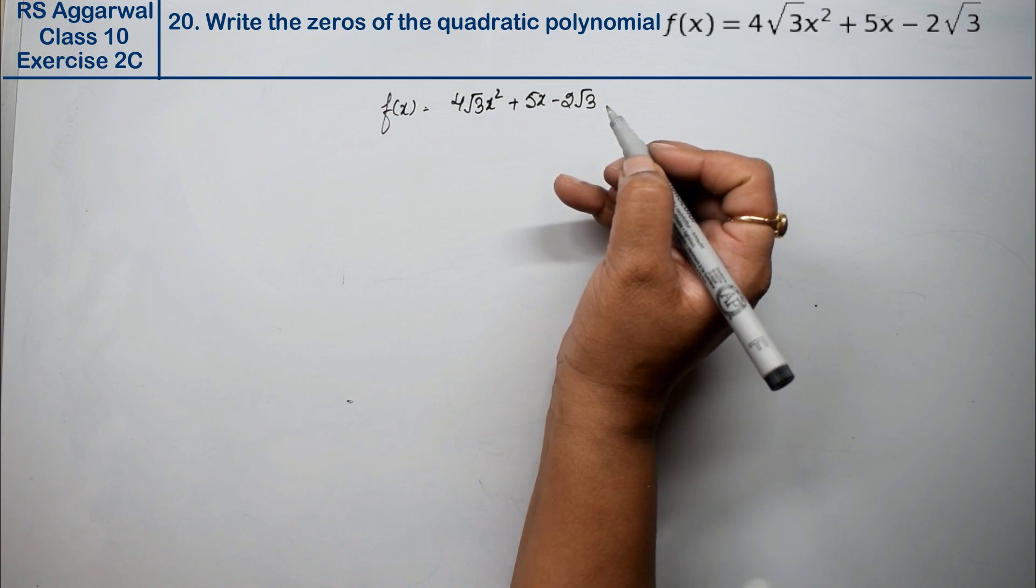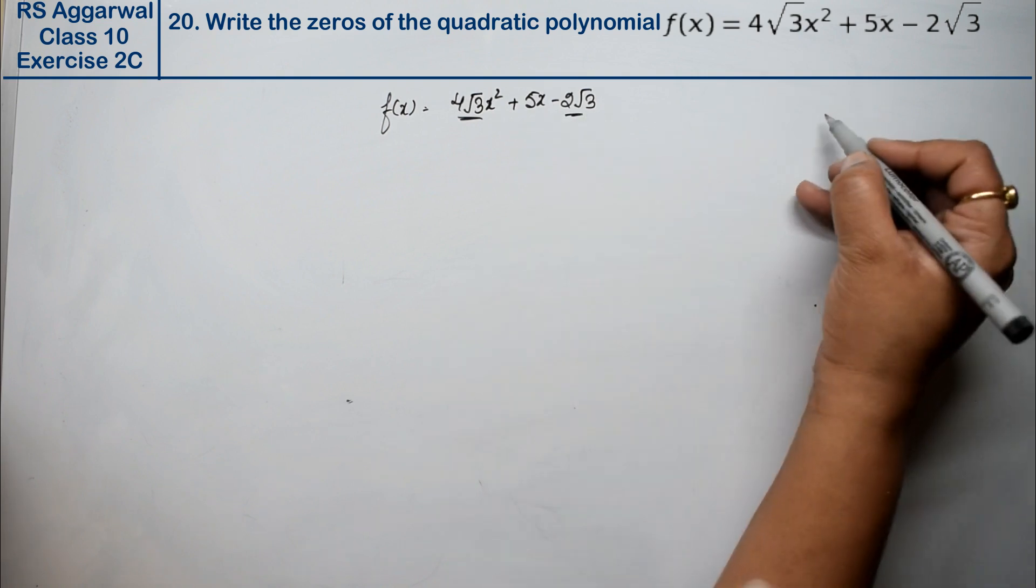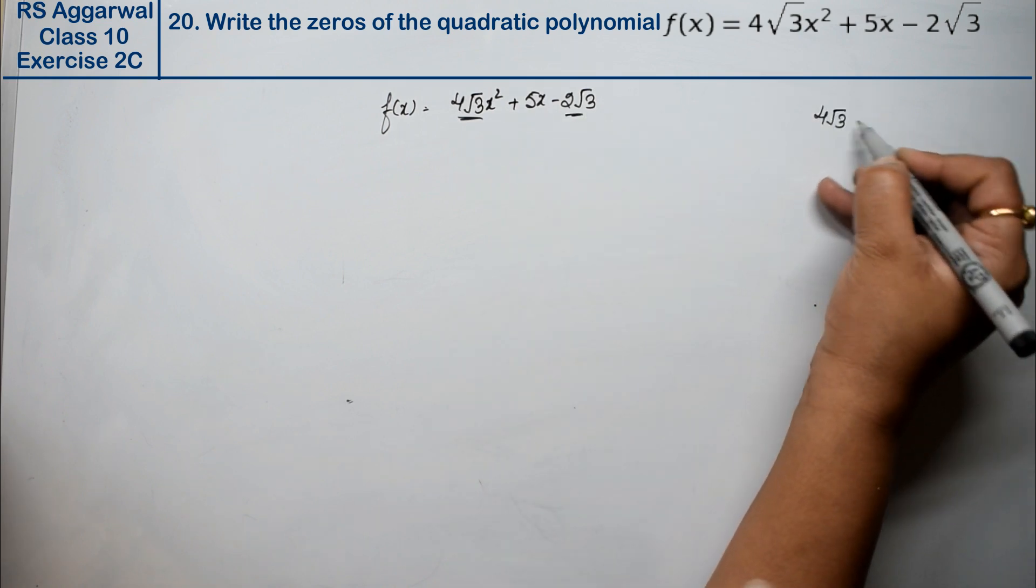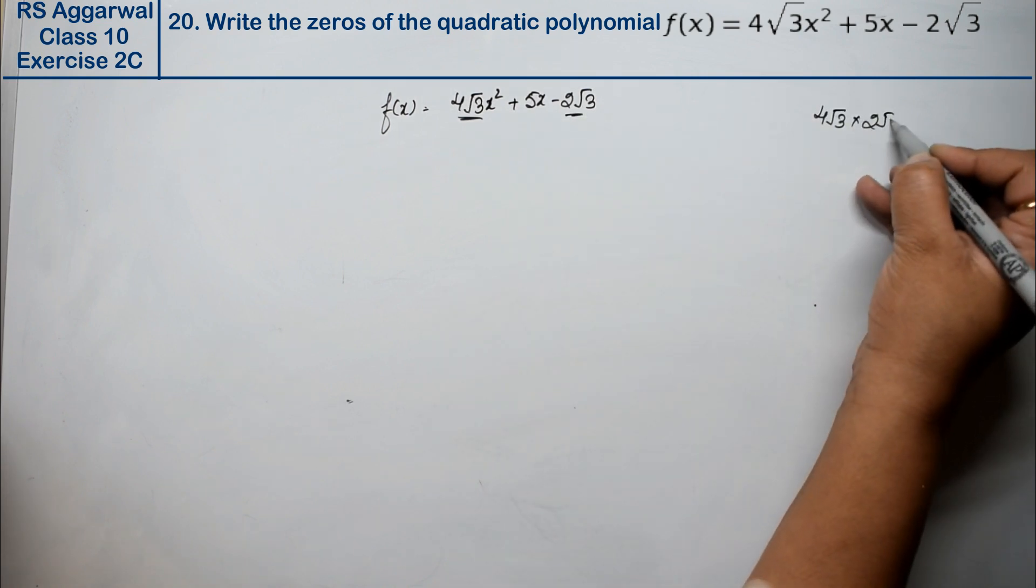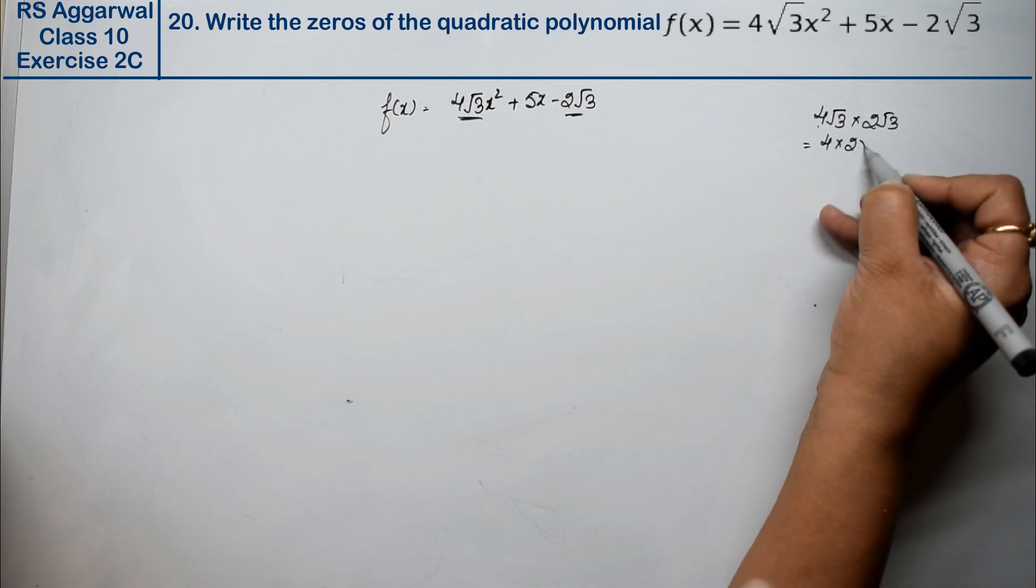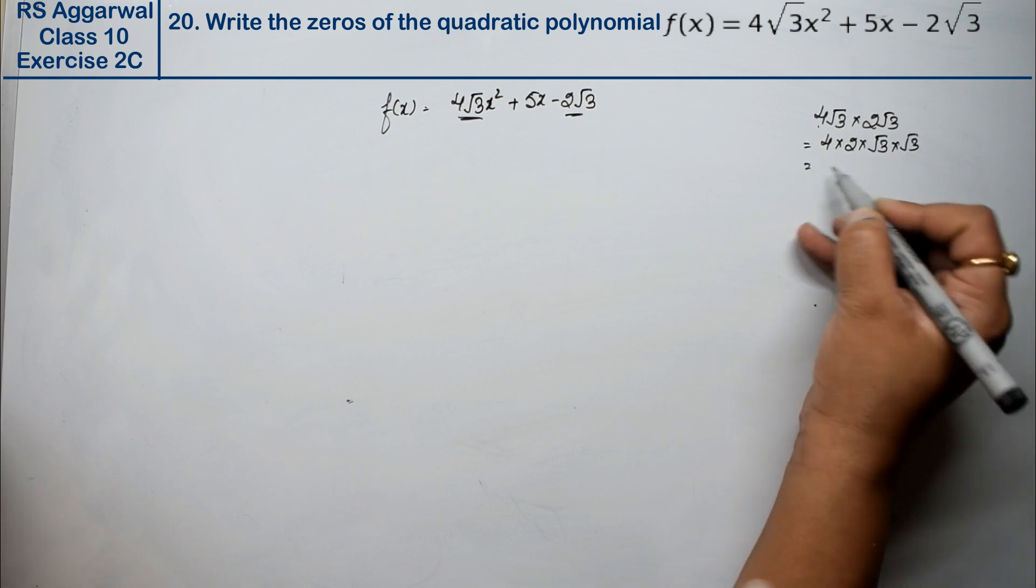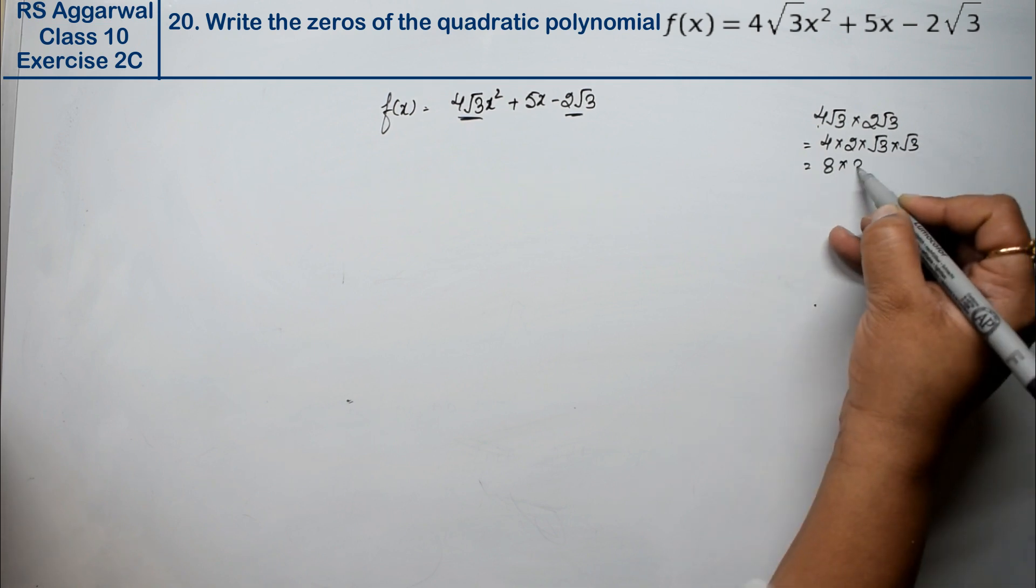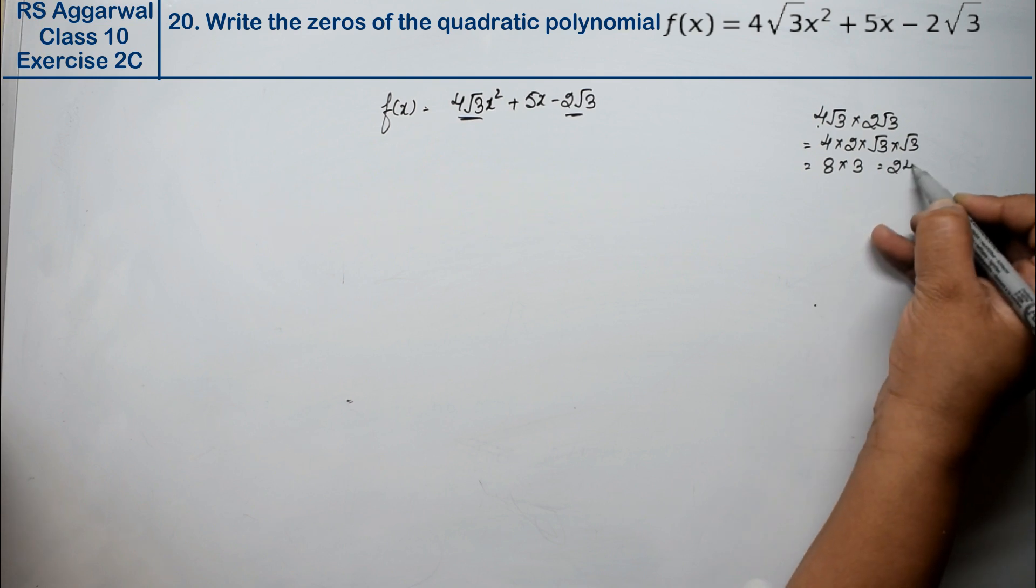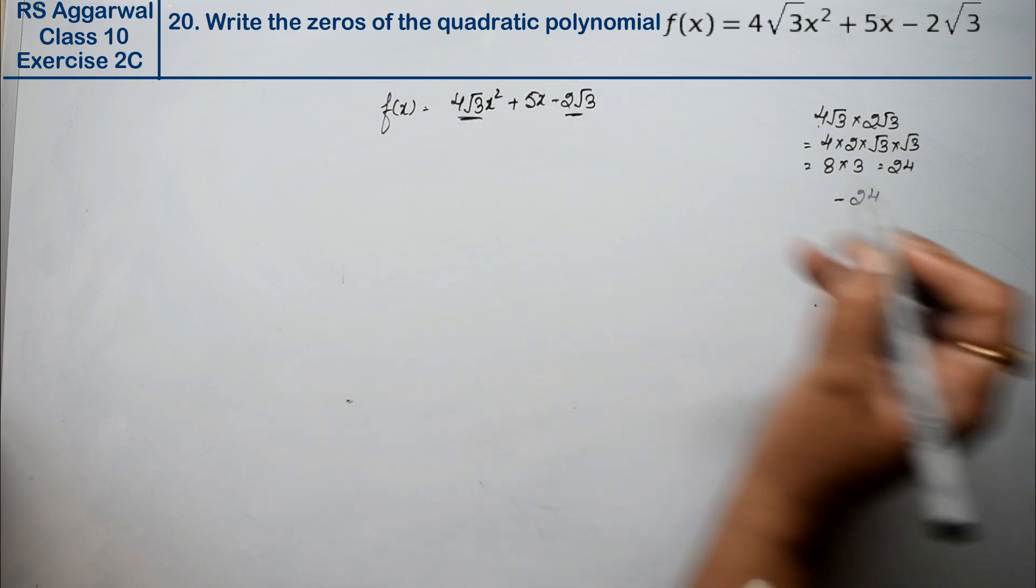How do we find zeros? By factorization. So we multiply these terms: 4√3 × 2√3. The outer terms multiply separately: 4 × 2 × √3 × √3. That's 4 times 2 is 8, √3 × √3 is 3, giving us 24. Now we need 24 with a minus sign.